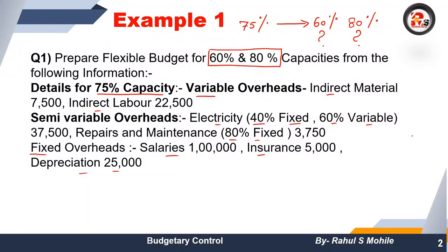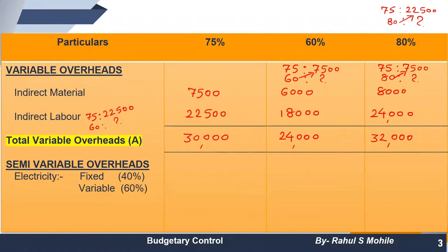The second part is semi-variable overheads. In semi-variable, part is fixed and part is variable. For electricity, 40% is fixed and 60% is variable. The amount is 37,500. First find 40% of 37,500 to get the fixed portion: that is 15,000. Then find 60% of 37,500 to get the variable portion: that is 22,500.